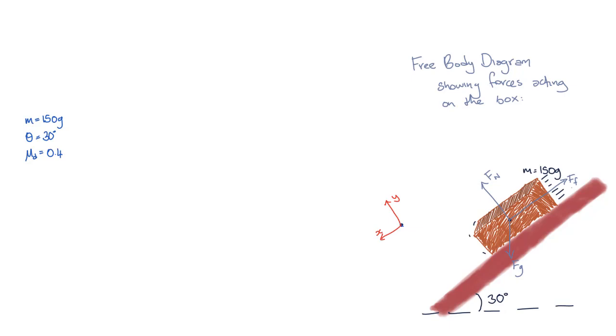This is a good choice of axes because two of our three forces lie directly along the axes, so we don't have to work out their components. The only vector we need to work out the components for is gravity. Let's break the gravitational force into our perpendicular components, the x component along the ramp, and the y component perpendicular to the ramp.